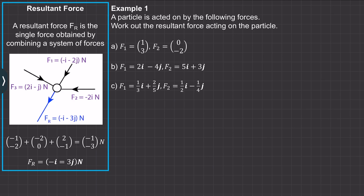Hi. In this video we're going to look at modeling forces as vectors. If you imagine we have a particle and we apply a force to it in a particular direction, with a magnitude of for example 5 newtons, that direction could change. So the point is that the force has a direction and a magnitude, which is why we can model it as a vector. We're going to look at what happens to a particle when you have multiple forces, all modeled as vectors, acting on a single particle — how this creates the resultant force and in what direction it travels.